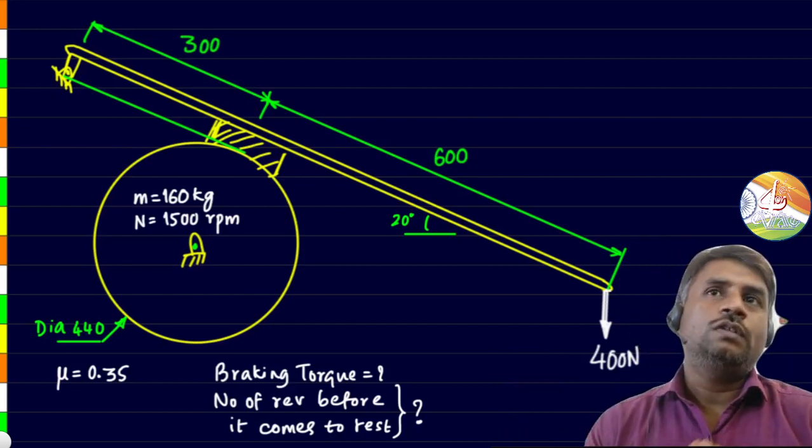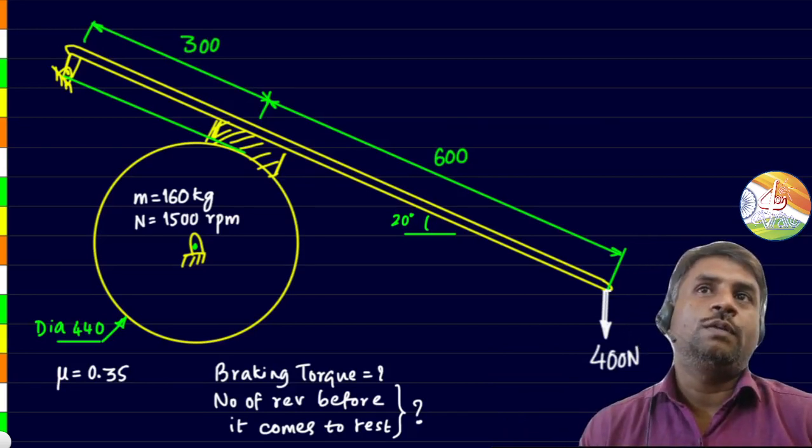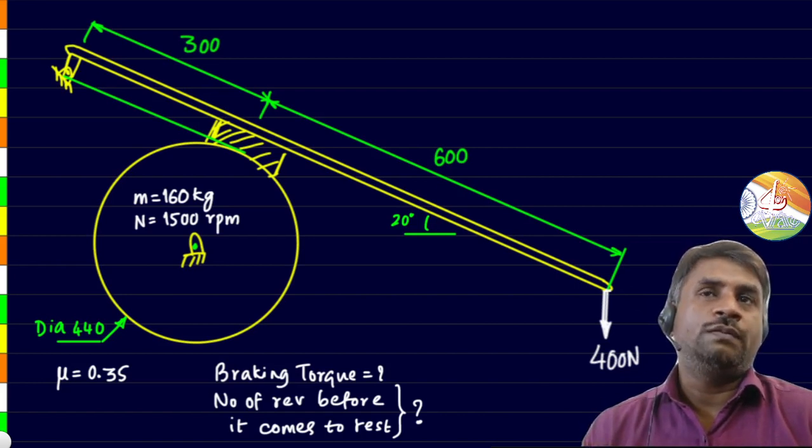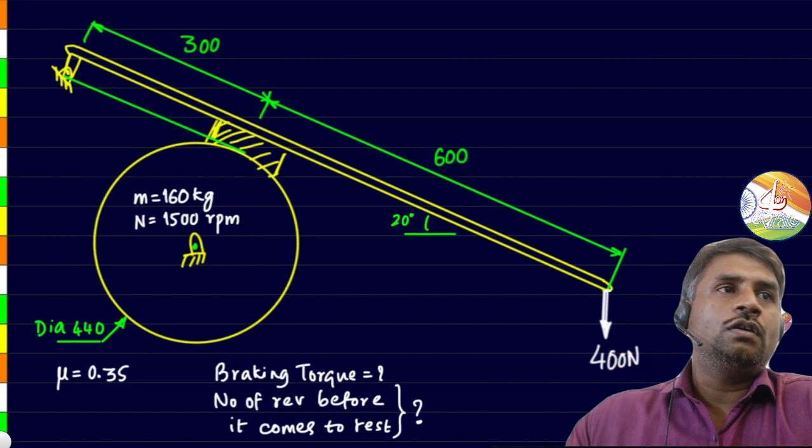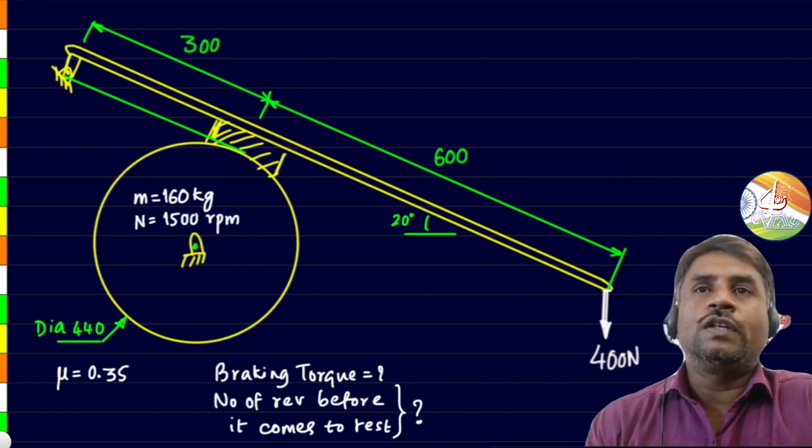You can see there is a brake given to us. The drum is having a mass of 160 kg. It's rotating at 1500 rpm. The coefficient of friction has also been given, that is 0.35.